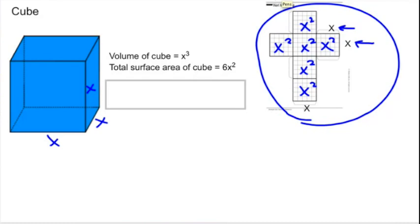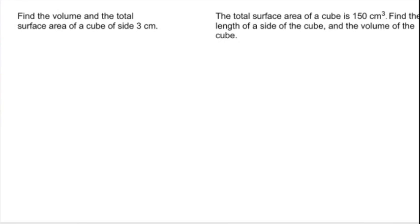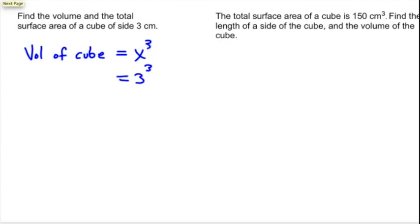What does that really mean? Let's take a look at an example. Find the volume and total surface area of a cube of side 3 centimeters. So we're going to find the volume of the cube. Since we can use X cubed, we're going to take that 3 centimeters and cube it. Remember that 3 to the third is 3 times 3 times 3, not 3 times 3. So that's going to get us 27, and our volume is 27 cubic centimeters.